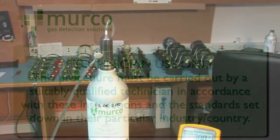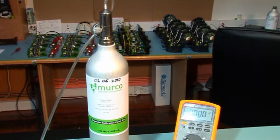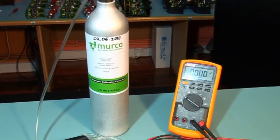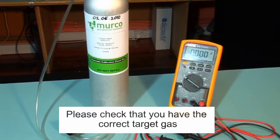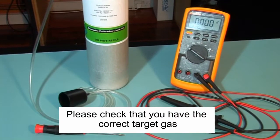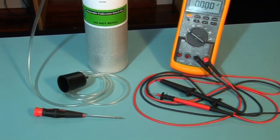The tools required are a digital voltmeter with a resolution to two decimal places, crocodile clips and/or a test probe, a flat-bedded screwdriver, and a Merco calibration kit which includes your cylinder of calibration gas, flow regulator, flexible non-absorbent tubing, and a vented calibration hood.